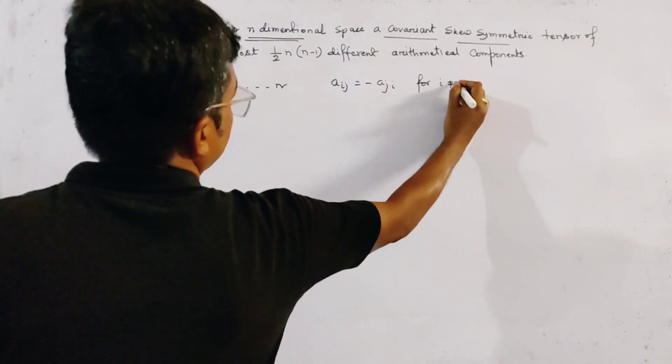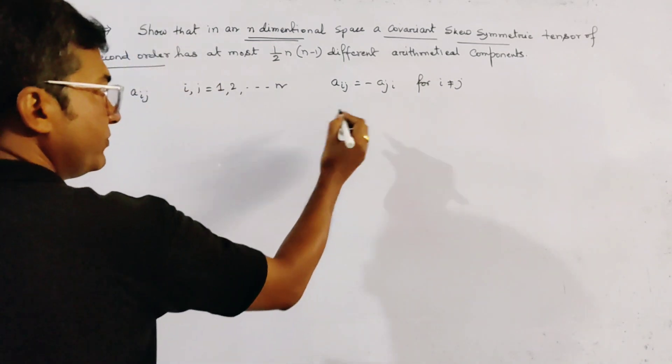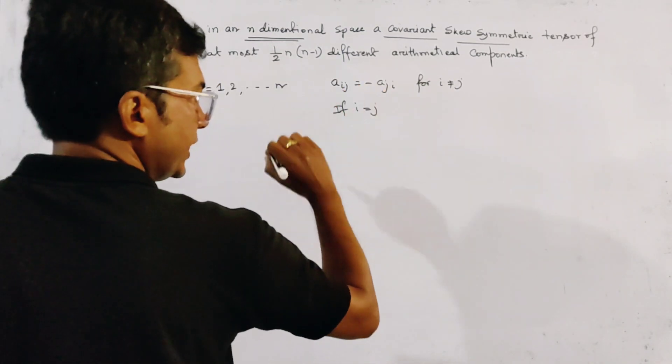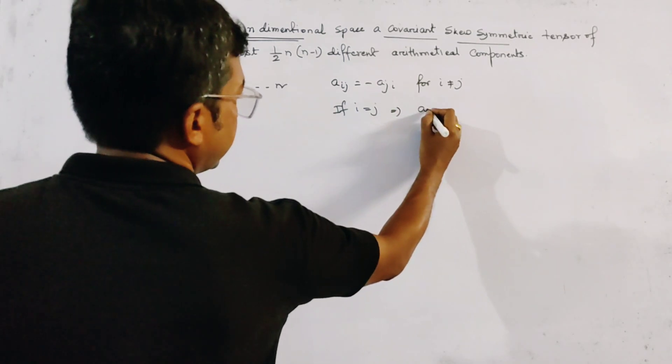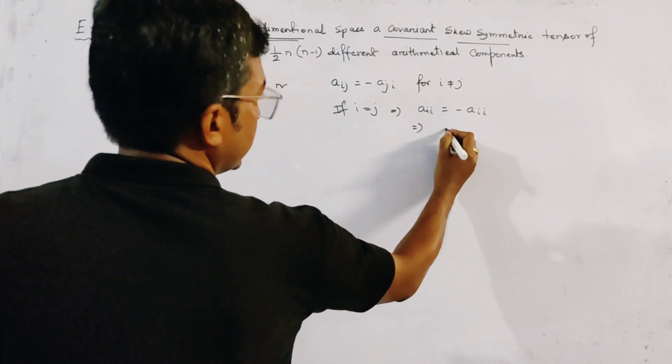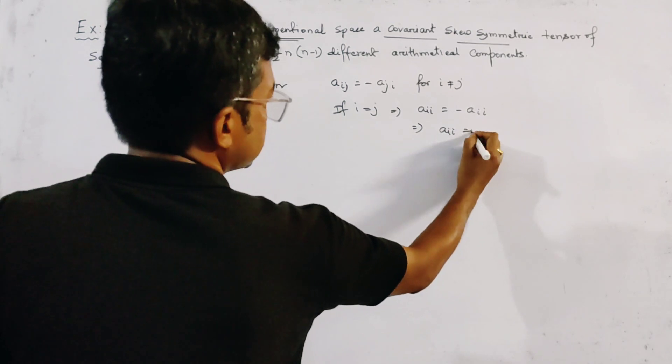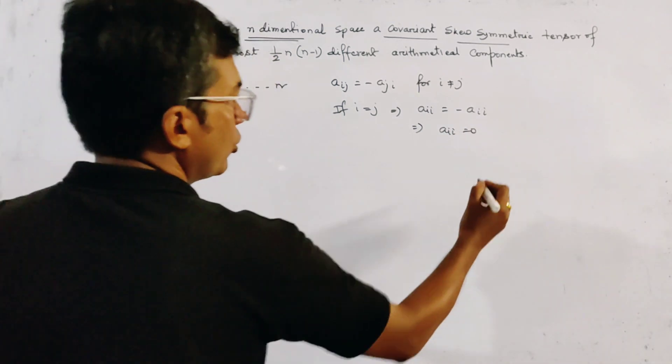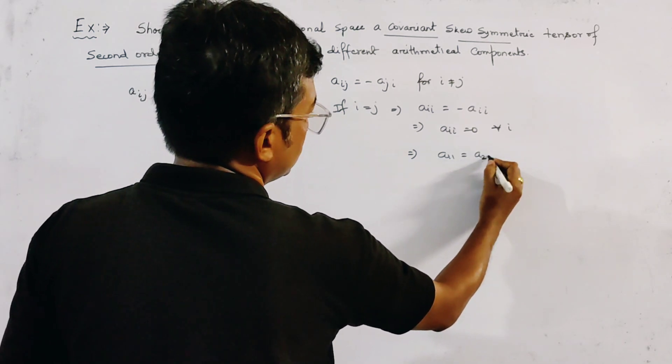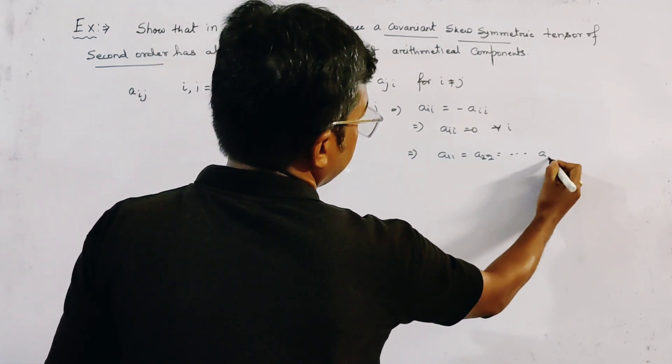For i not equal to j. And if i equals j, then we get a_ii equals minus a_ii. So we get a_ii equals 0 for all i. That is, we get a_11, a_22 to a_nn.